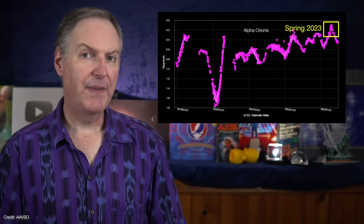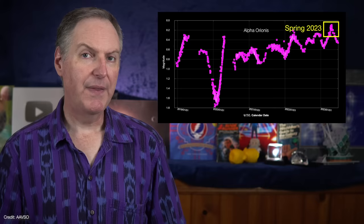The most dramatic example of its variability came during the Great Dimming of 2019, when it fell to about one-third its normal brightness. By the following spring, Betelgeuse had recovered. But then in 2023, Betelgeuse shone about 50% brighter than normal.